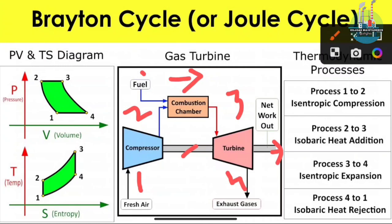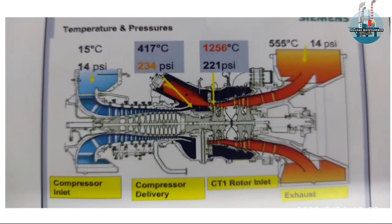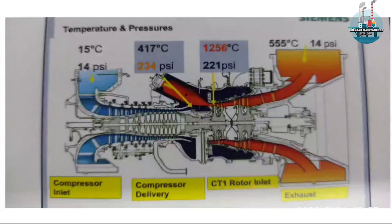It is very important, but as an engineer, you can understand that the gas turbine is running on the Brayton cycle. Now the basic principle is to look at the Brayton cycle — how does the temperature and pressure vary in a gas turbine. This diagram is from the Siemens SGT 400, showing the temperature and pressure through the turbine.